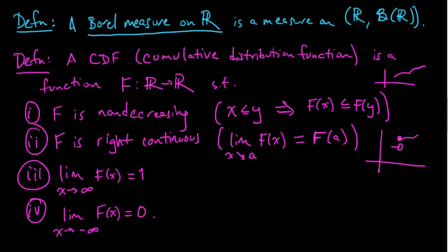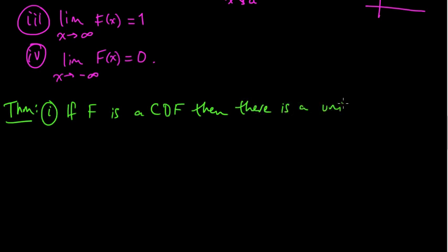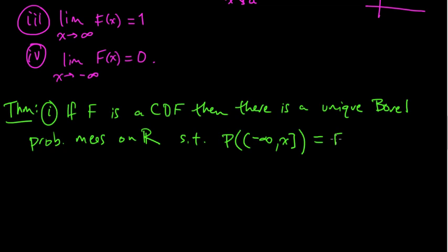Okay, now we are ready for the theorem. So that's a beautiful little theorem. Here's a theorem. This is nice. One: If F is a CDF, then there's a unique Borel probability measure on R, unique Borel probability measure on R, such that the measure of the sets of this form, minus infinity to X, equals F of X. So this is for any X in R.